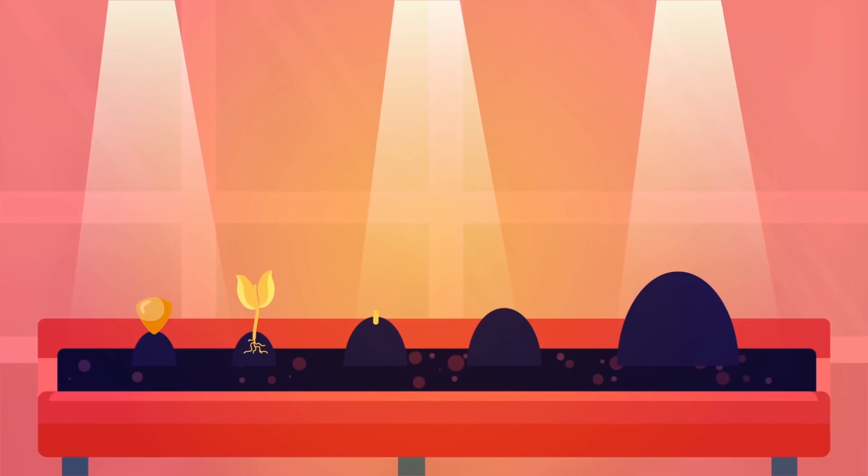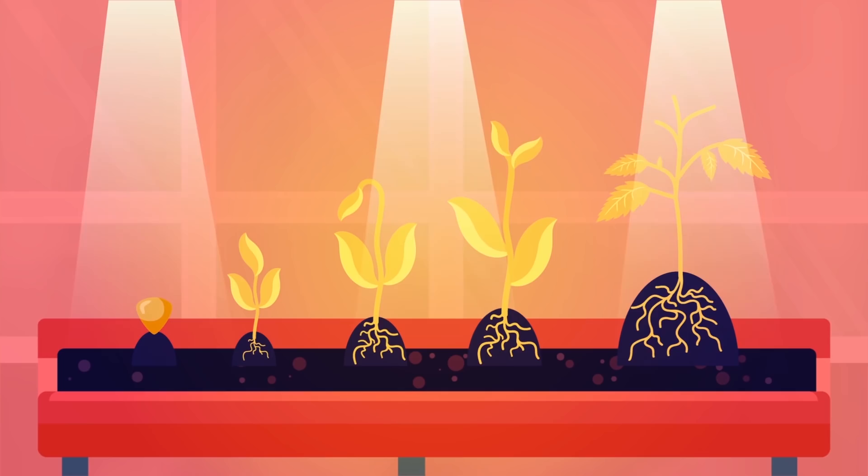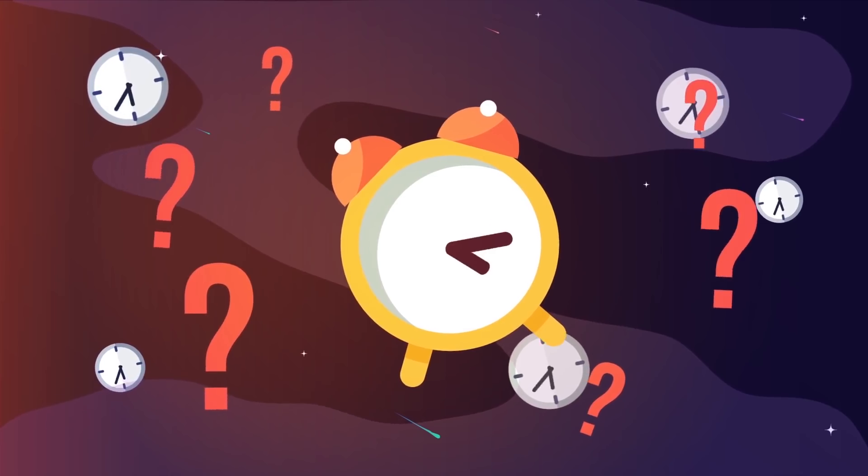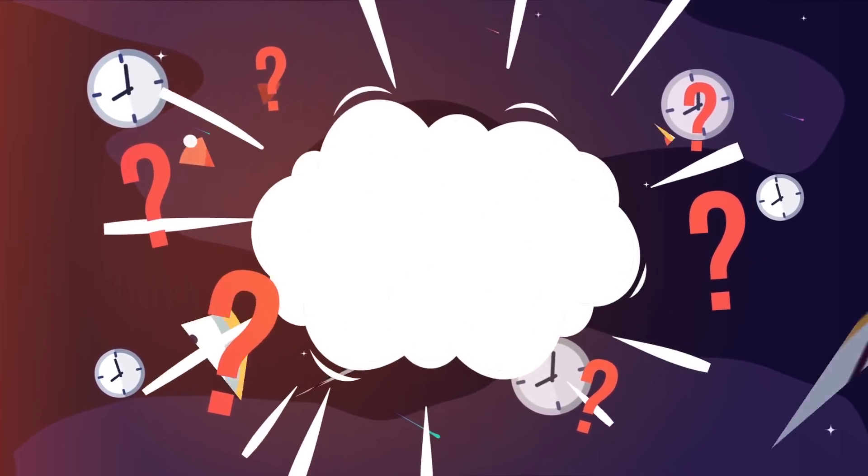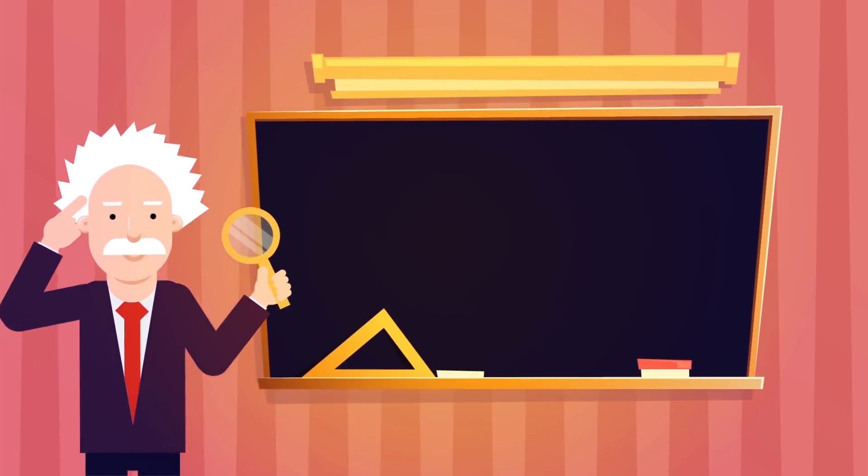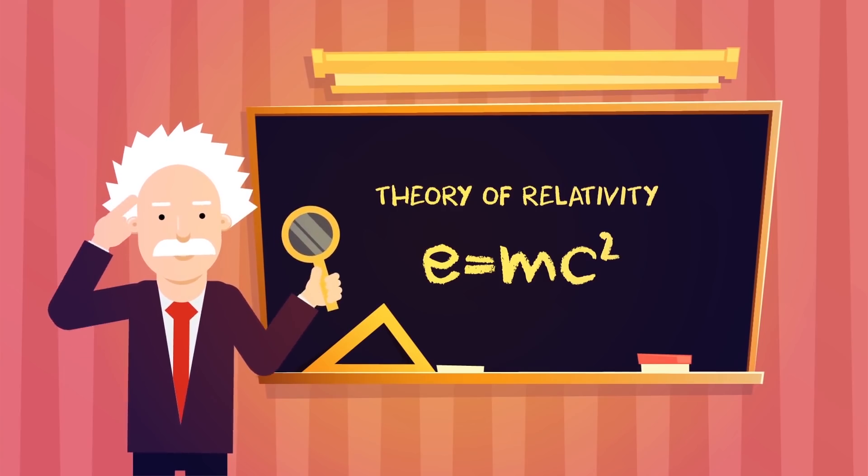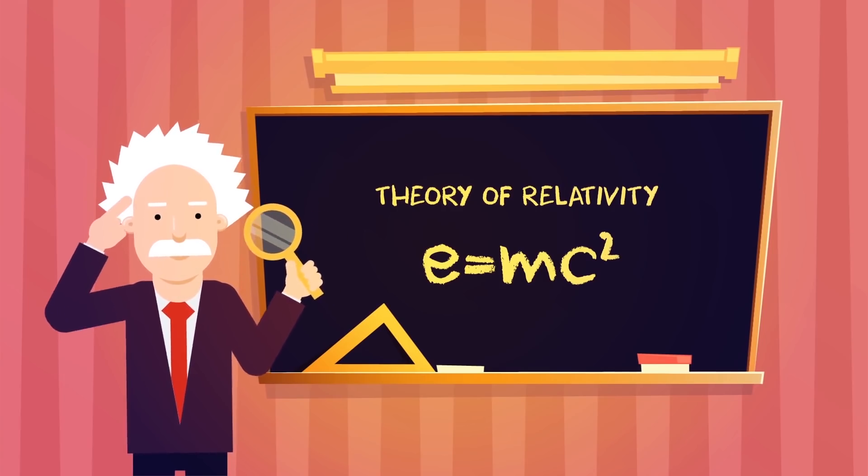It means that a cause is always followed by an effect, never the other way around, something that the structure of the universe relies upon. The problem with this understanding of time, though, is that it doesn't hold true in all circumstances. That is why Einstein's theory of relativity is seen as one of the most important scientific breakthroughs ever because it explains the changing nature of time.